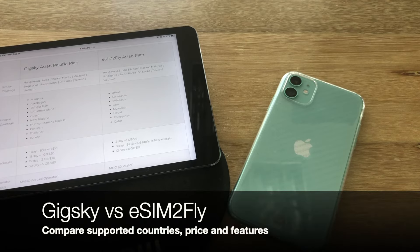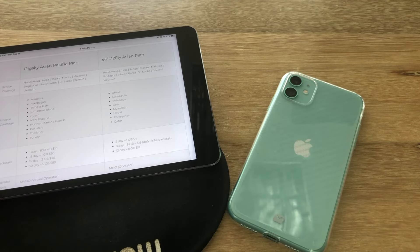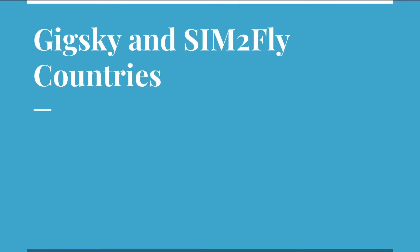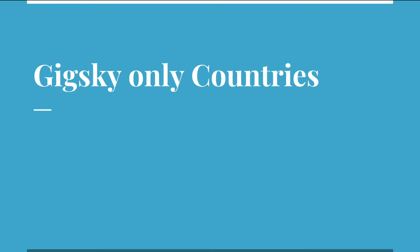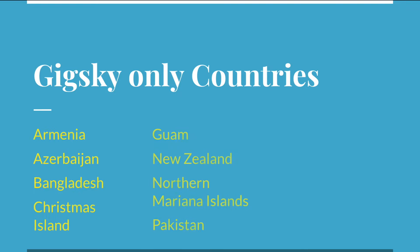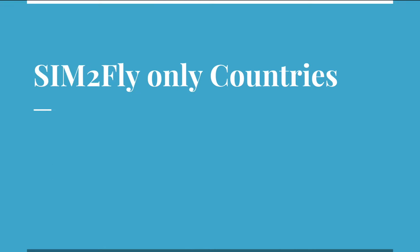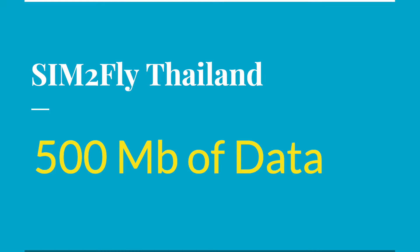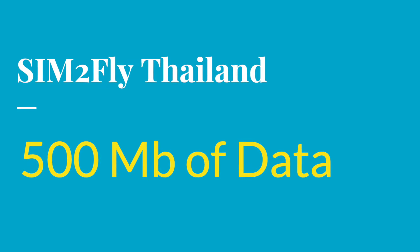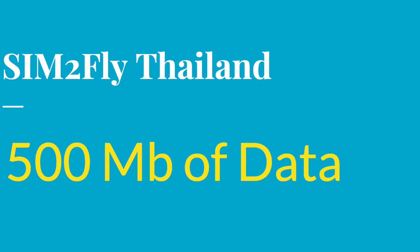Now let's look at a comparison of the GigSky Asia-Pacific plan and the AIS SIM2Fly eSIM Asian plan. Both plans have support for Hong Kong, India, Japan, Macau, Malaysia, Singapore, South Korea, Sri Lanka, Taiwan, and Vietnam. GigSky does have countries that SIM2Fly does not. Some notable countries that GigSky does not cover are Indonesia, Myanmar, Nepal, Philippines, and Laos. On the other side, SIM2Fly does not cover Pakistan or New Zealand, and for Thailand SIM2Fly only provides a nominal 500 MB for short-term usage.